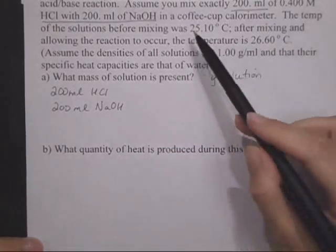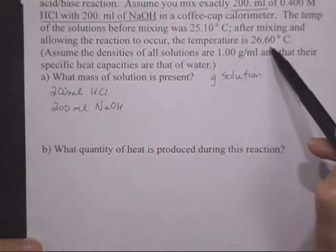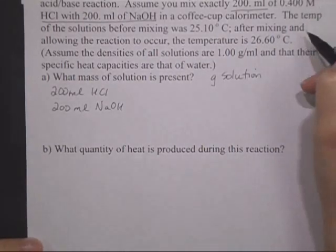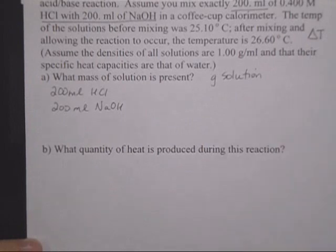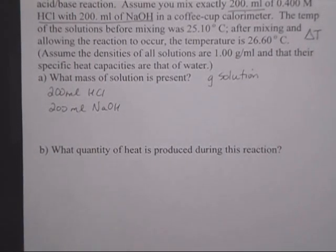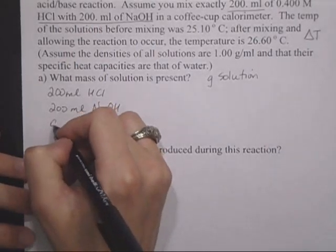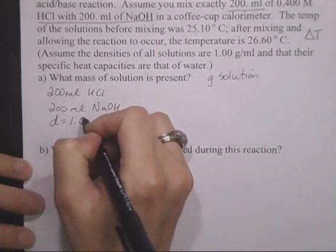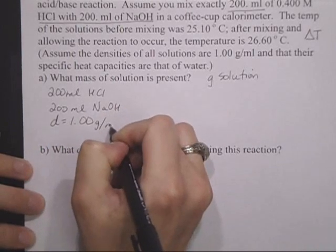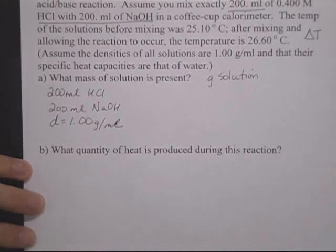The temperature of the solution before mixing is given to us. After mixing, also given to us. So we can get a delta T from that. Assume the densities of all solutions are one gram per milliliter. Oh, that's helpful. Cool, because that just gave me a way to get from volume to mass.